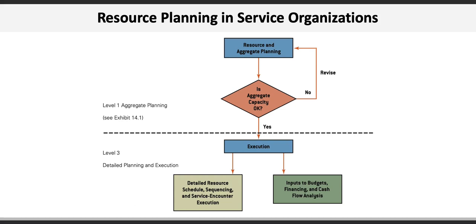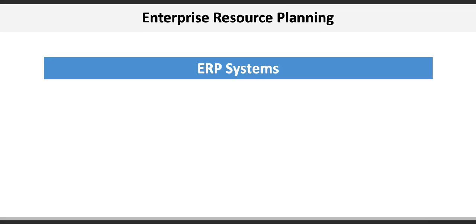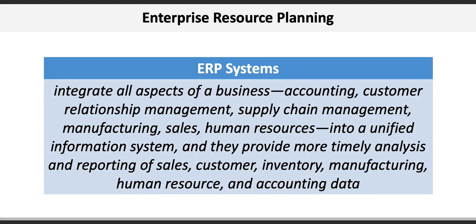Because of the inherent complexity involved with managing all the various resources necessary to produce goods and provide services, many larger firms engage in enterprise resource planning, or ERP, where, through the use of ERP systems, firms can integrate all aspects of business — including accounting, customer relationship management, supply chain management, manufacturing, sales, and human resources — into a unified information system. They provide more timely analysis and reporting of sales, customer, inventory, manufacturing, human resource, and accounting data.